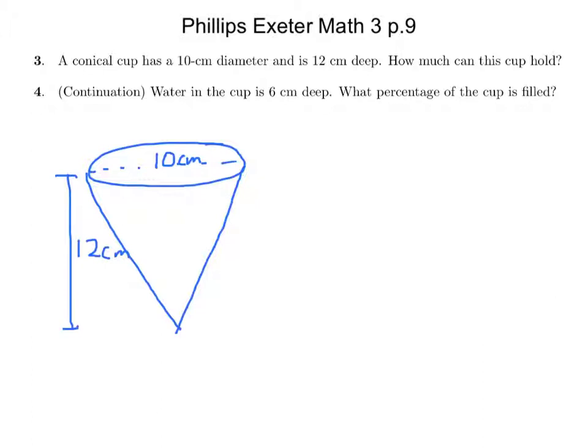And how much can this cup hold? So what's the volume of this cup? So pretty easy here. Joey, what's the volume of the cup? What is 1 third pi times r squared times h? Yes, so it's 1 third pi r squared times the height.